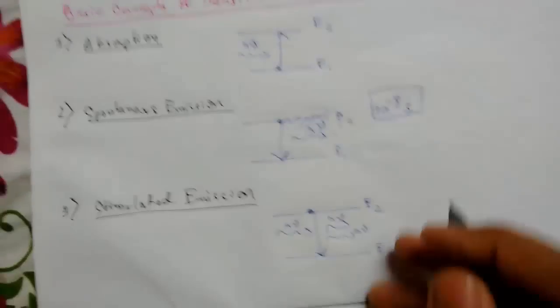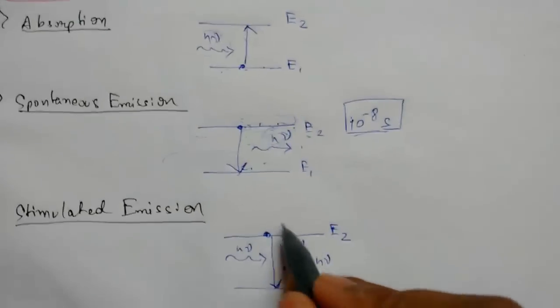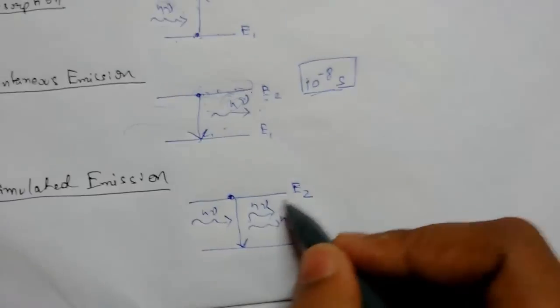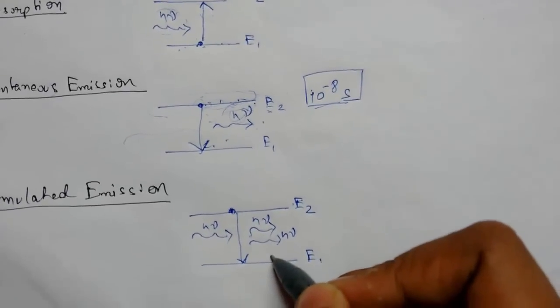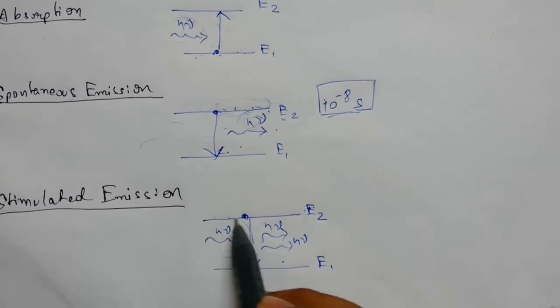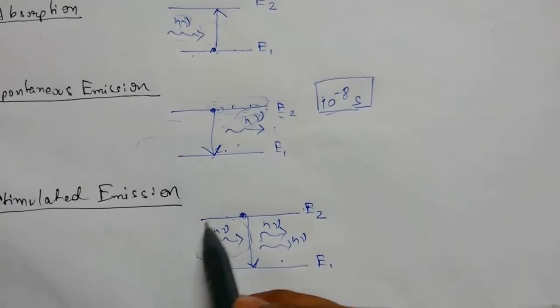When an atom is in the excited state, that is the higher energy state, it will jump to the lower energy state as the lifetime expires and due to the incident photon.